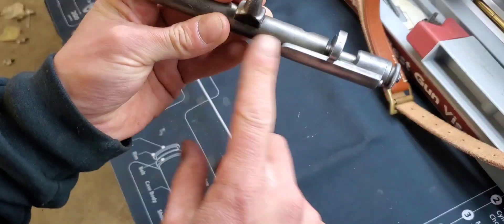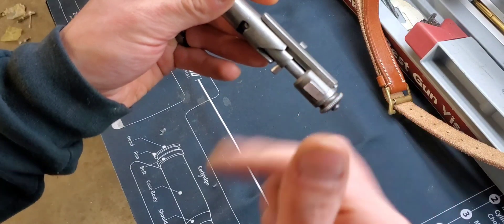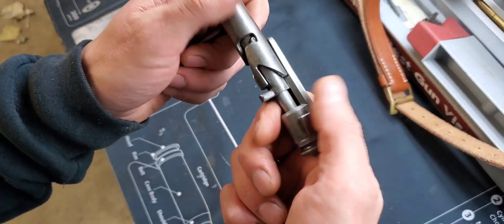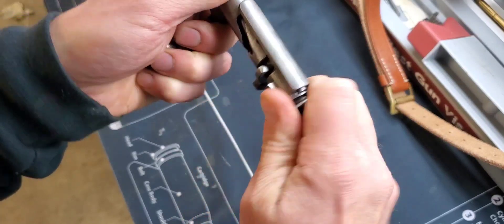As you can see this bolt is cocked, so we're gonna have to decock it and that's simply done by just pulling out and following that down.